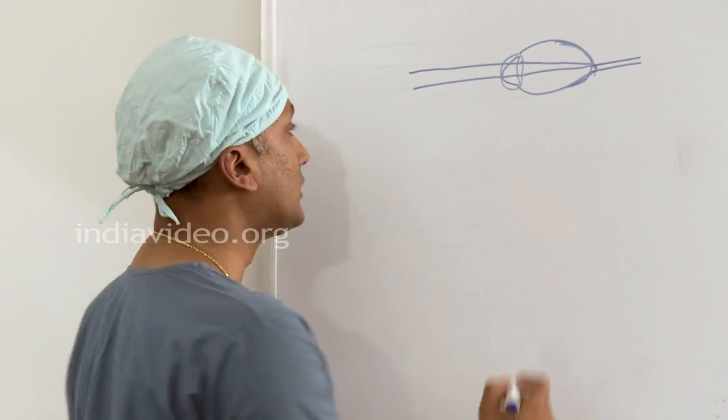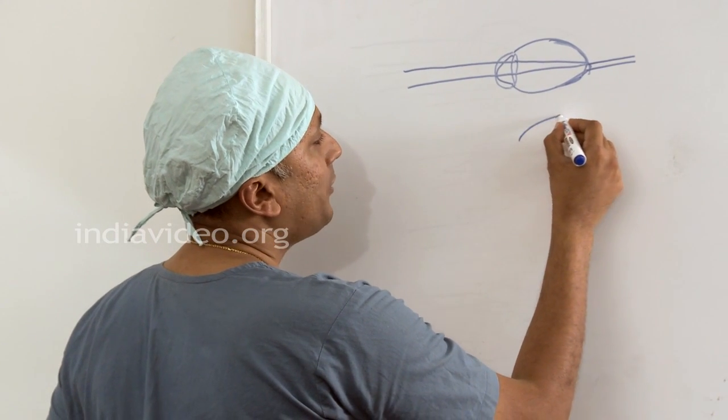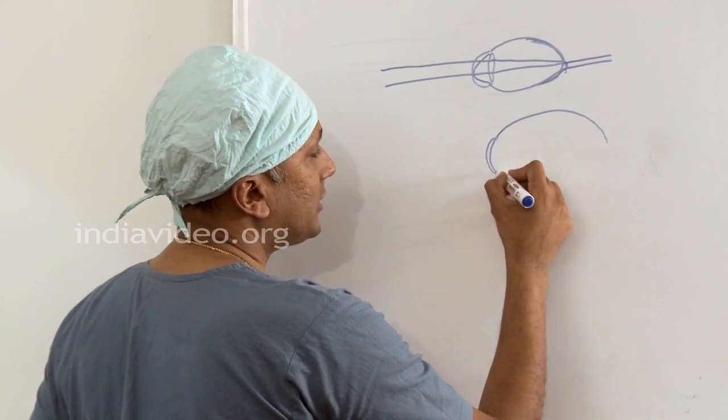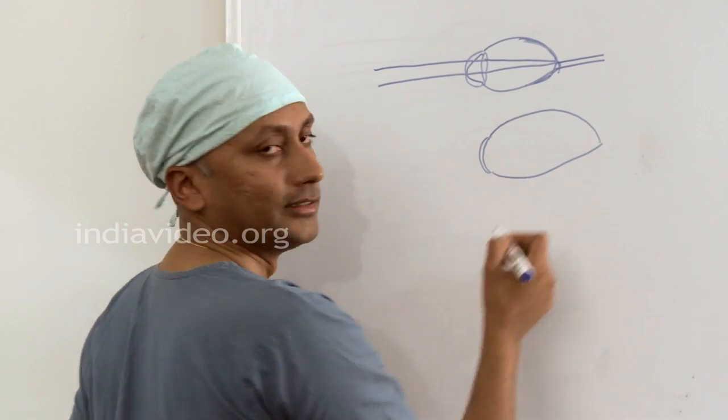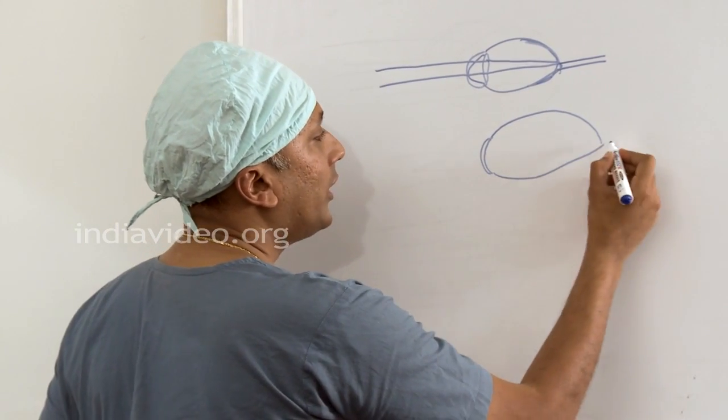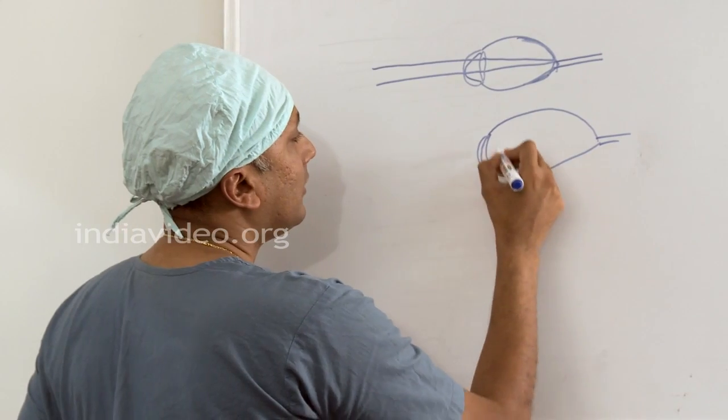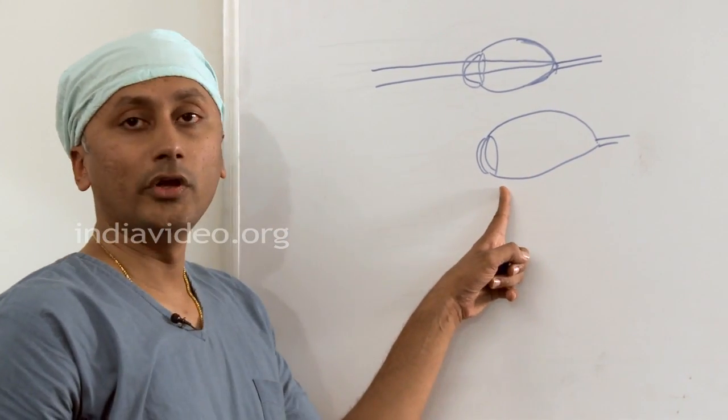What happens in short sight is the shape of the eye is distorted and the eye is very elongated. Such a long eye is what is seen in myopic persons.